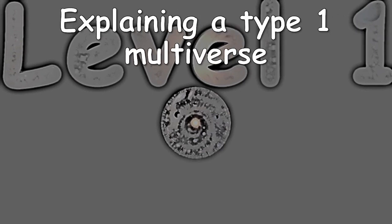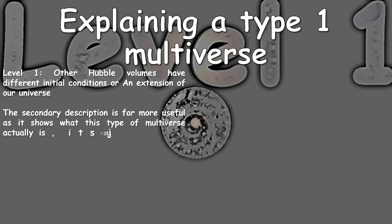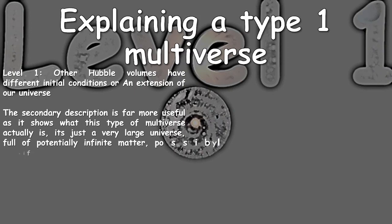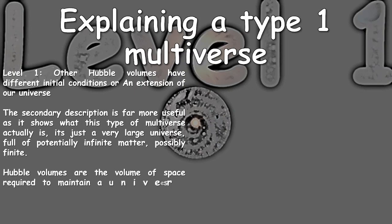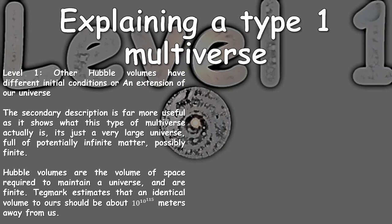Let's explain what a Level 1 multiverse is. Level 1: other Hubble volumes have different initial conditions, or an extension to the universe. The secondary description is far more useful, as it shows a Type 1 multiverse is just a very large universe with potentially infinite matter, possibly finite. Hubble volumes are the volume of space required to maintain the universe and are finite. Tegmark estimates that an identical volume to ours should be every 10 to the 10 to the 115 meters away from us.